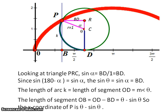Now we have the length of OB is equal to the length of OD minus BD, which in this case becomes theta minus sine theta, which gives us the x-coordinate of point P.